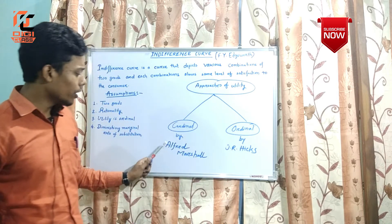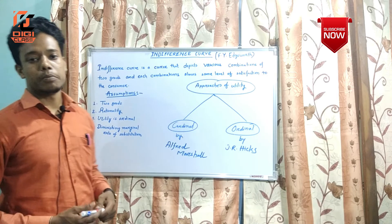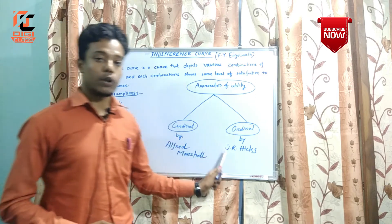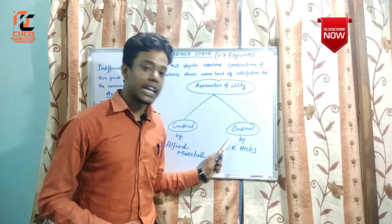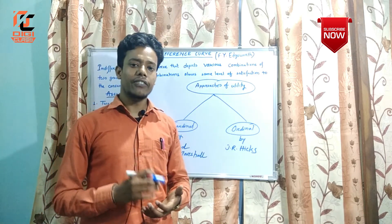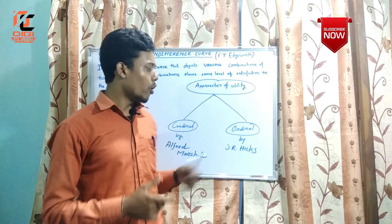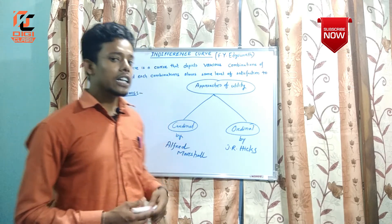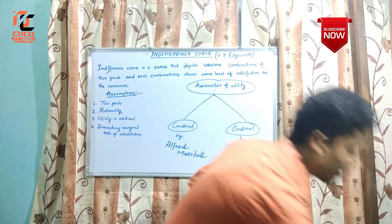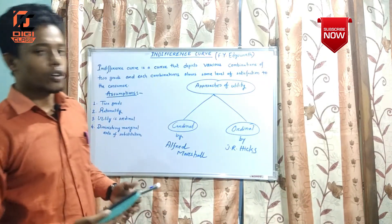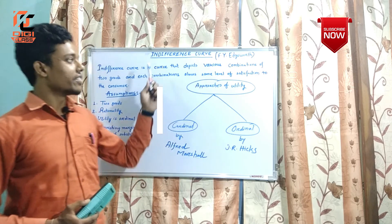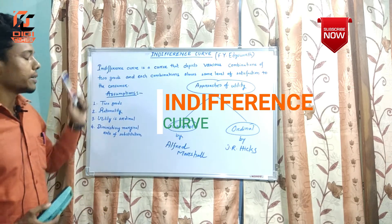According to Alfred Marshall, utility can be measured in a quantitative manner. But according to J.R. Hicks, utility cannot be measured in a quantitative manner as it is a subjective phenomena. On the basis of ordinal utility, the indifference curve was given, and we will discuss today's important topic: the indifference curve.